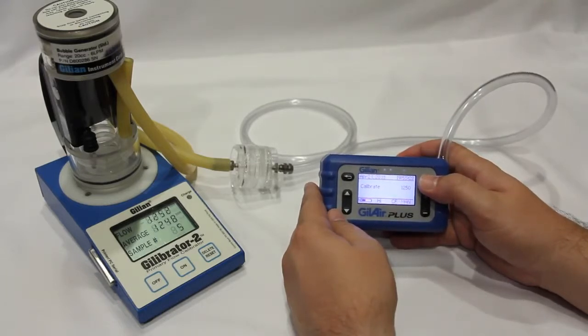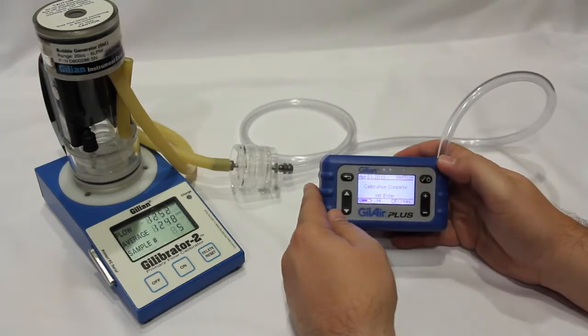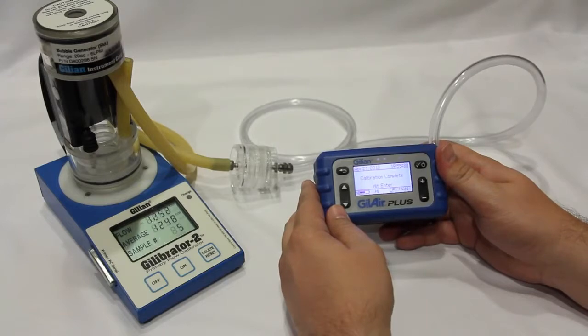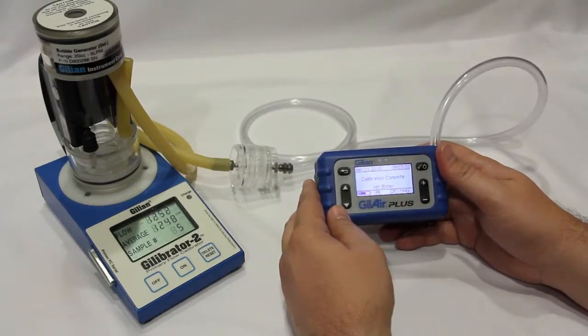Once the flow rates match, press enter to accept the calibration, or escape to go back. In this case, we'll press enter and accept the calibration.